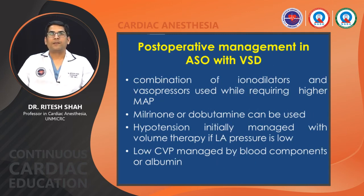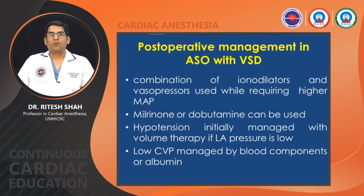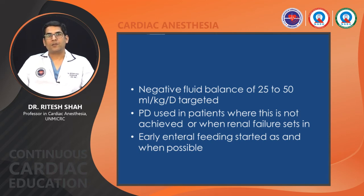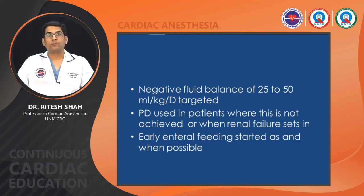A combination of inodilators and vasopressors is used while requiring higher mean arterial pressure in patients with TGA with VSD. Milrinone or dobutamine can be used; hypotension is initially managed with volume therapy. If low blood pressure and low CVP, managed with blood components or albumin. Negative fluid balance of 25–50 mL/kg/day is targeted for the first two days. Peritoneal dialysis is used in patients where this is not achieved or when renal failure starts. Early enteral feeding is started as soon as possible — usually after six hours if the patient is hemodynamically stable. Attention is directed towards lowering the length of ICU and hospital stay.